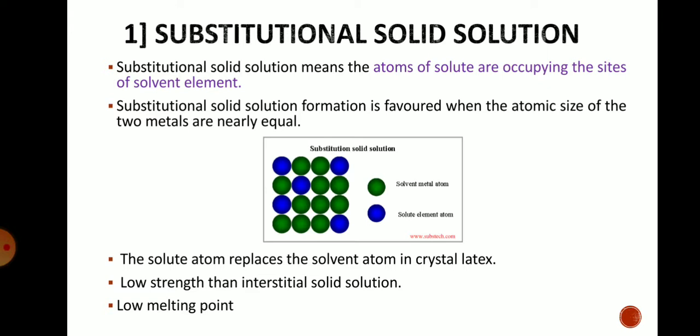Substitutional solid solution formation is favored when the atomic sizes of the two metals are nearly equal. Substitutional solid solutions have lower strength than interstitial solid solutions. They also have a lower melting point.